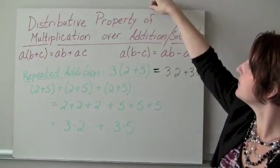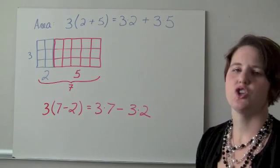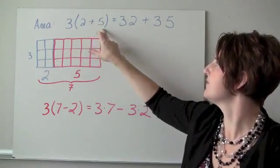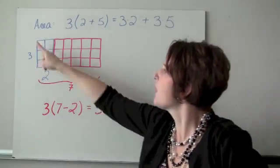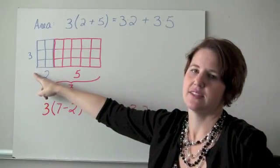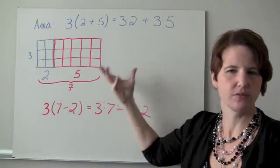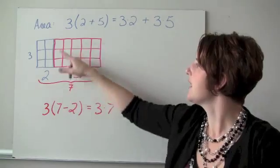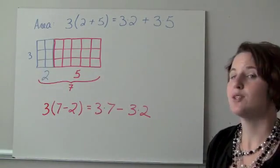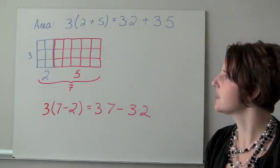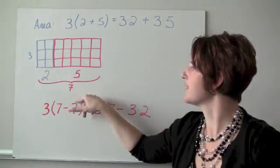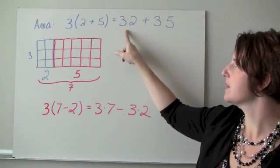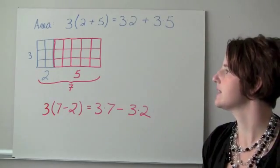Another great model for the distributive property is the area model. Looking at 3 times (2 plus 5), I think of a rectangle where the left side is 3 and the bottom is 2 plus 5, which equals 7. Breaking it into a blue rectangle that's 3 by 2 and a red rectangle that's 3 by 5, the total area is either a 3 by 7 rectangle, or the area of the blue rectangle (3 times 2) plus the area of the red rectangle (3 times 5).